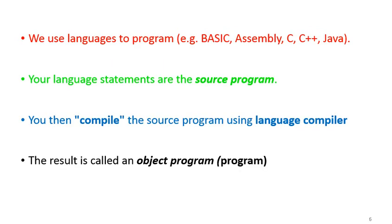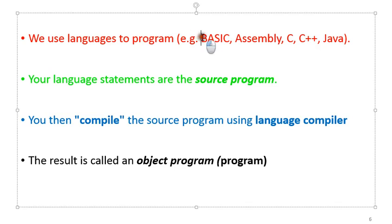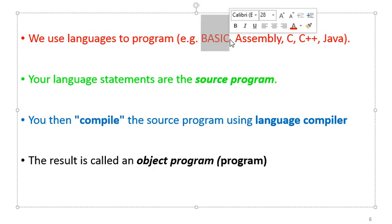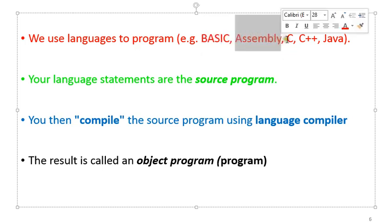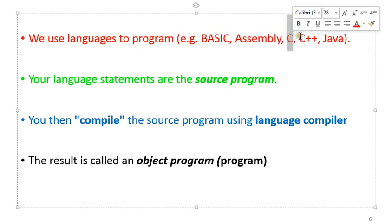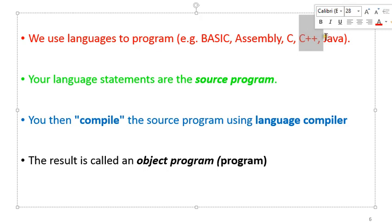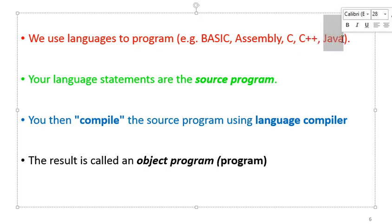The computer runs based on the programs written in it. We use different languages — different formats for writing programs — and we call these formats programming languages. Basic examples include BASIC, which is an acronym for Beginners All-Purpose Symbolic Instruction Code. Another example is assembly language. We have C language, C++ programming language, Java, and of course many more. These are just a few examples.